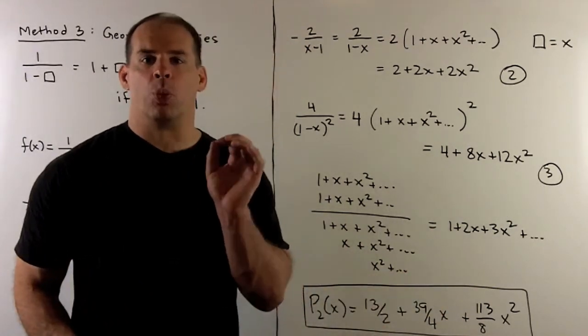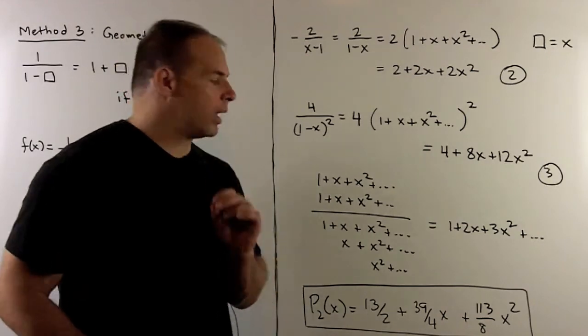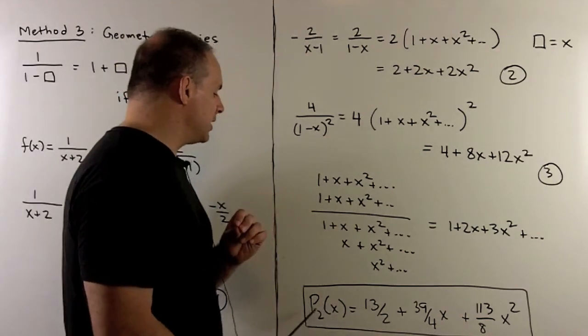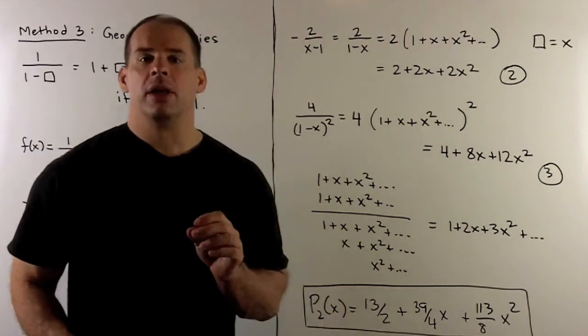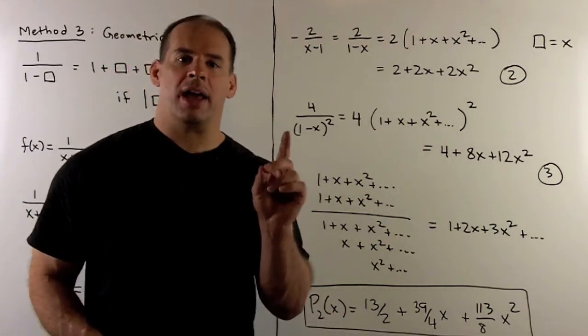If we add items 1, 2, and 3, we see that we get what we got before for p₂(x). So that's a check for our work and a second method.